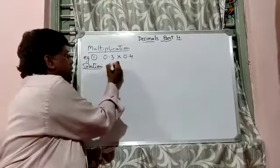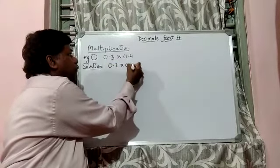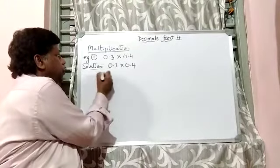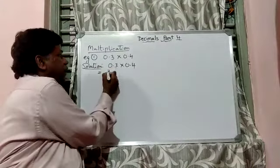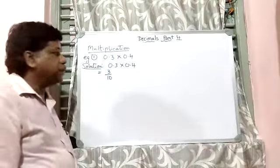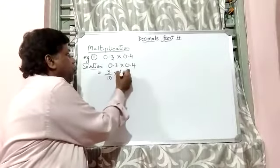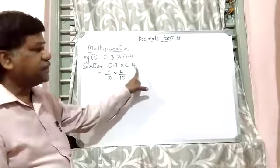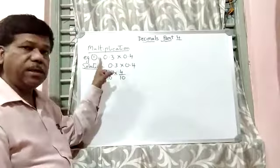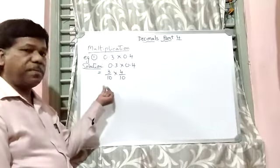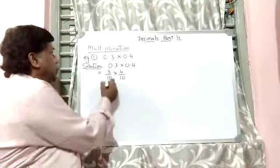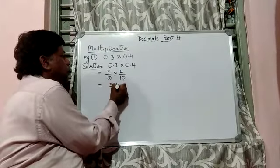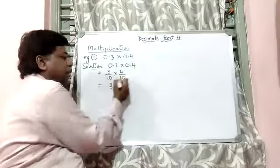So let us consider 0.3 and 0.4. When we do this, it will be equal to 3 divided by 10, as in the place values, multiplied by 4 divided by 10, as the decimal place is in the tenths place. 4 is in the tenths place and 3 is in the tenths place. So therefore, 3 out of 10, 4 out of 10. When you multiply these together, we get 3 into 4 divided by 10 into 10 is 100.